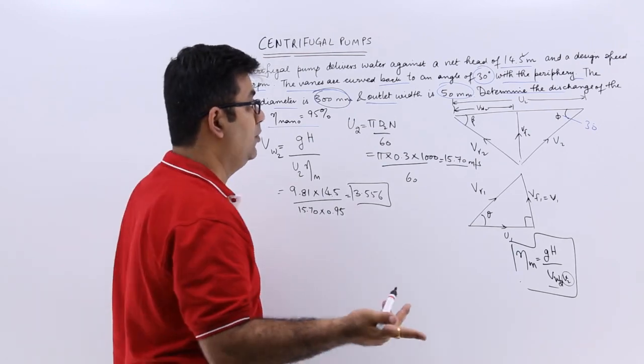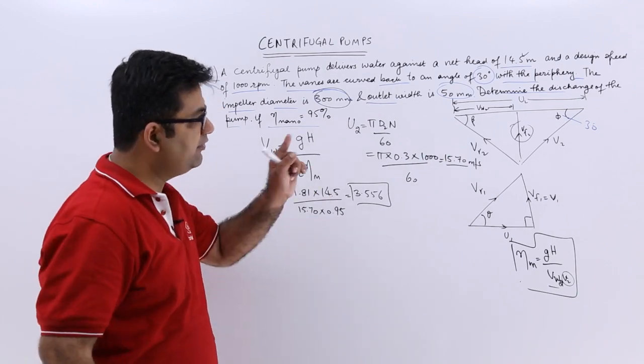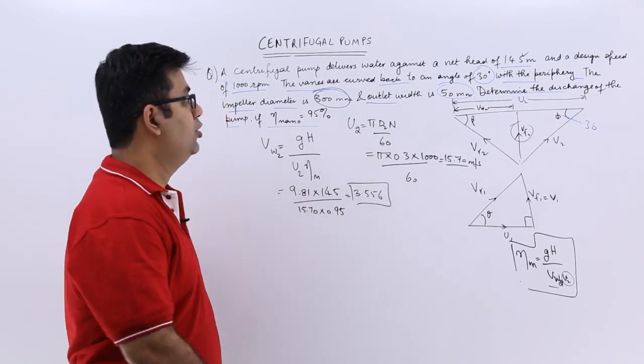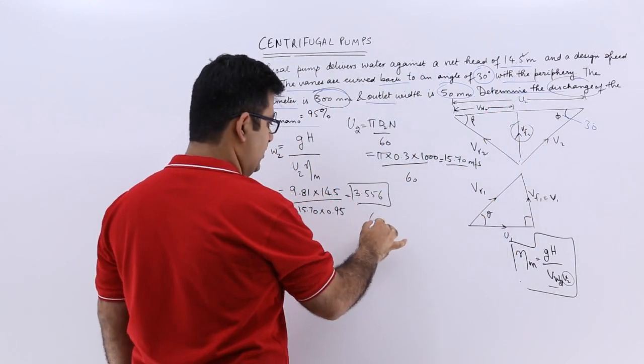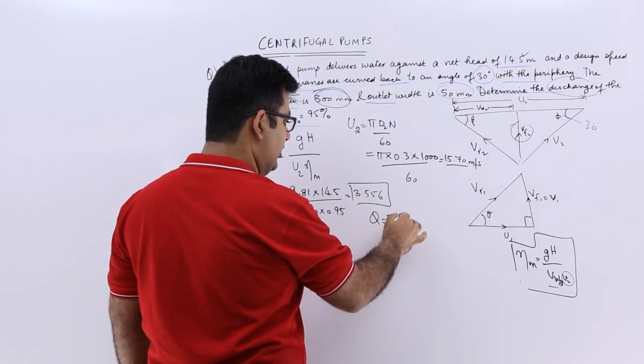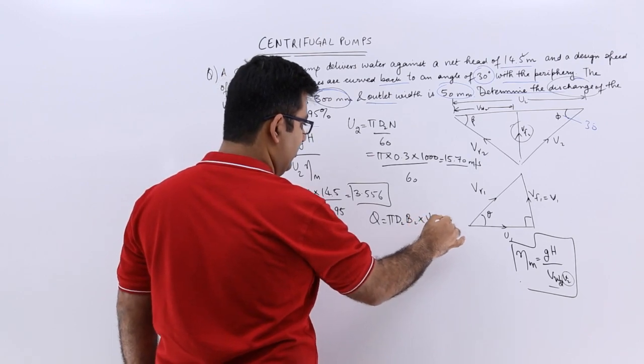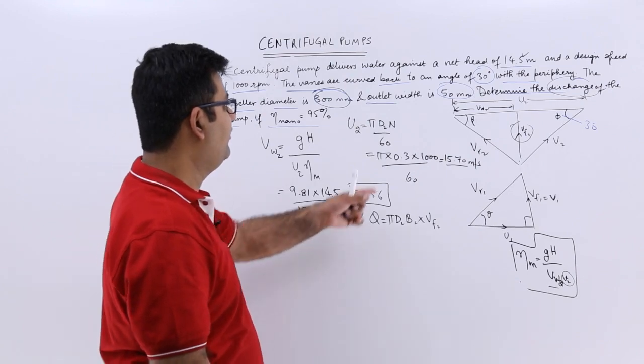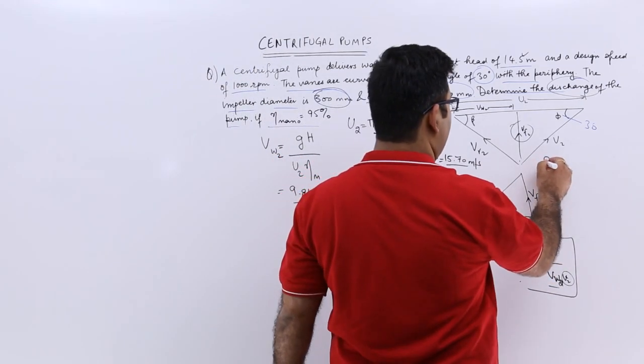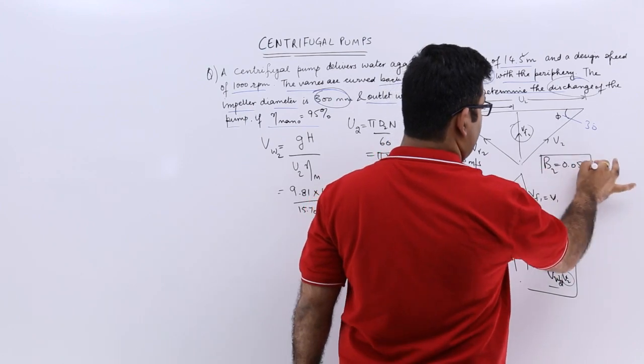This is Vw2. Now why do I need Vw2? Because I need to calculate Vf2 because that is the velocity I will be using to calculate the discharge. The discharge is pi into D2 into B2 into the outlet flow velocity. V2 is given to us as 50 mm, means B2 is 0.05 meters.